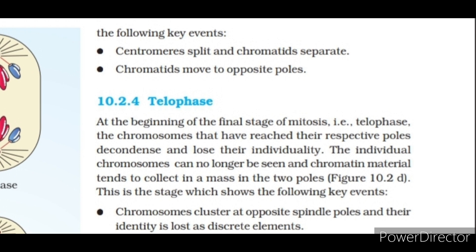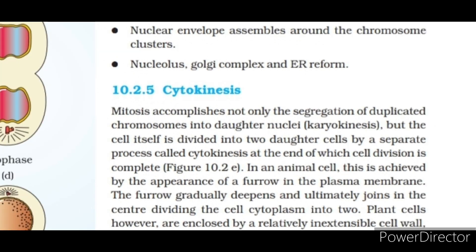At the beginning of the final stage of mitosis, telophase, the chromosomes that have reached their respective poles decondense and lose their individuality. The individual chromosomes can no longer be seen and chromatin material tends to collect in a mass at the two poles. Key events of telophase include: chromosomes clustering at opposite spindle poles and their identity being lost as discrete elements; nuclear envelope assembling around the chromosome clusters; and nucleolus, Golgi complex and ER reforming.